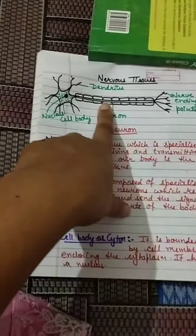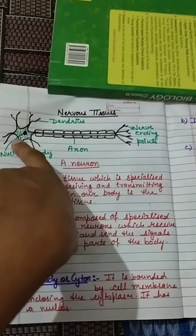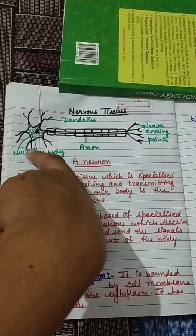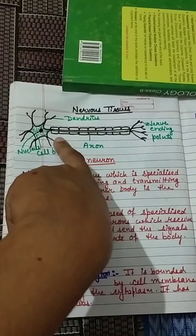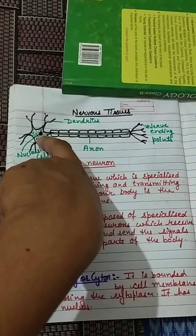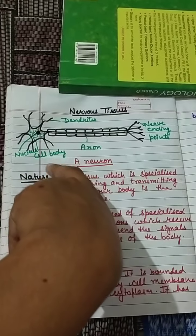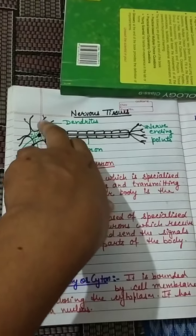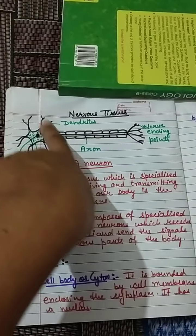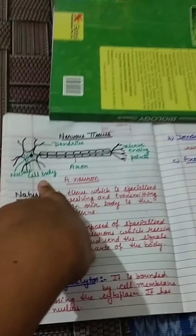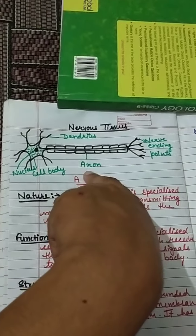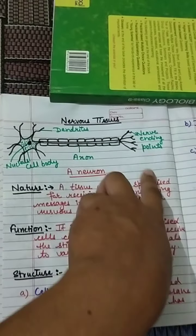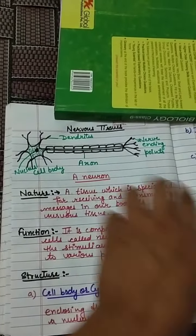Next is nervous tissue. In the diagram of the nervous tissue, you can see different pointing ends called dendrites, the nucleus, and the liquid inside the cell called cytoplasm. The entire structure is called the cell body, and the long road-like structure is called the axon. These are the nerve ending points.